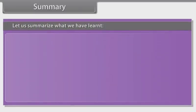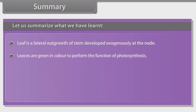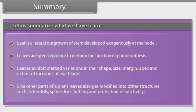Summary. Let us summarize what we have learned. Leaf is a lateral outgrowth of the stem developed exogenously at the node. Leaves are green in color to perform the function of photosynthesis. Leaves exhibit marked variations in their shape, size, margin, apex and extent of incisions of the leaf blade. Like other parts of a plant, leaves also get modified into other structures such as tendrils and spines for climbing and protection respectively.